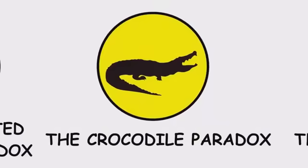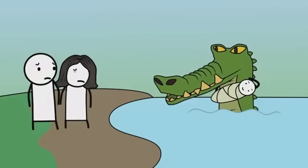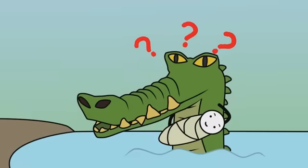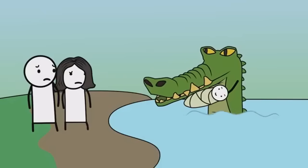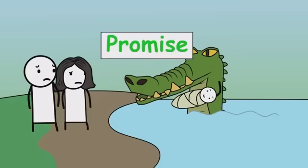The crocodile paradox. A crocodile takes a child and promises to return it only if the parent correctly predicts what he'll do. The parent says, you won't return my child. This creates a paradox. If the crocodile returns the child, the prediction is wrong. But if he keeps the child, he breaks his promise.